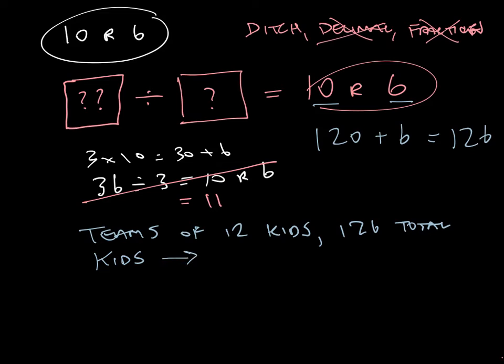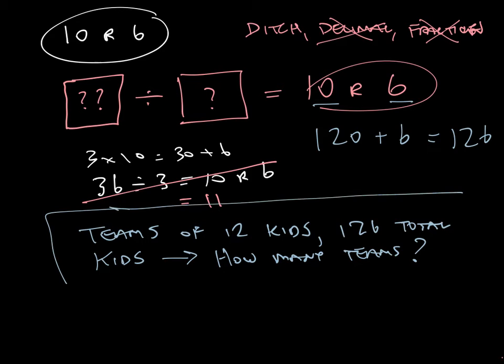So maybe I had, I wanted to make teams of 12 kids and I had 126 total kids. And so my math story here is how many teams can I make? So in this case, I've created a word problem that is going to give me, once I figure that out, 126 divided by 12. That's going to give me 10 and I'm going to have a remainder of 6.